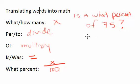Using our translation skills, we go from left to right. 15, 'is' is an equal sign, 'what' is x, 'percent' is x over 100, 'of' is multiply, 75.